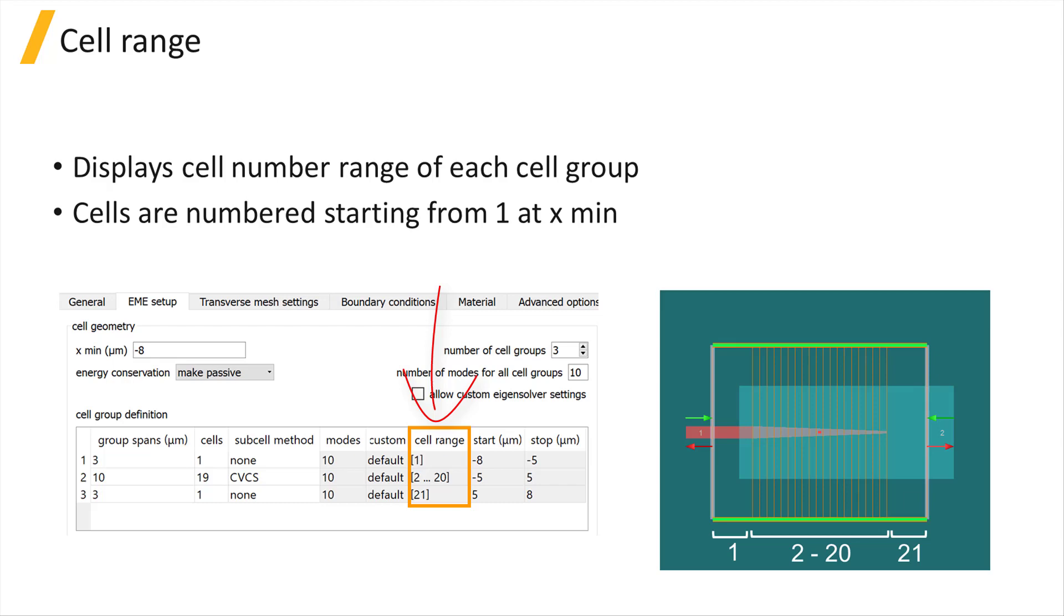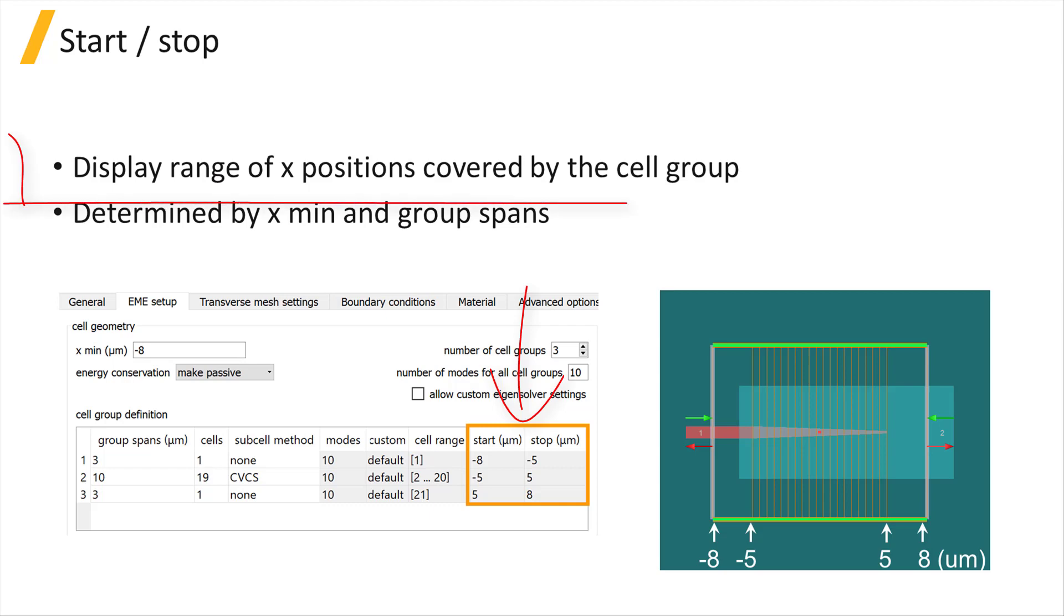The cell range displays the cell number range of each cell group. Cells are numbered starting from 1 at Xmin. Start and Stop display the range of X positions covered by the cell group, determined by the Xmin and the group spans.